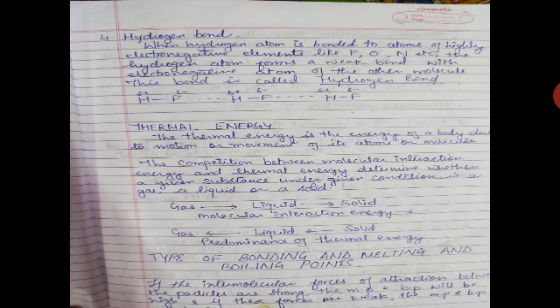The magnitude of repulsion forces increases rapidly as the distance between the molecules decreases. This is the reason that liquids and solids are hard to compress — in liquid and solid, the molecules are already close together and resist further compression because that would result in increased repulsion interaction. The energy of a body due to the motion of its atoms or molecules is known as thermal energy. Thermal energy is greater in gases than in liquids, and greater in liquids than in solids.